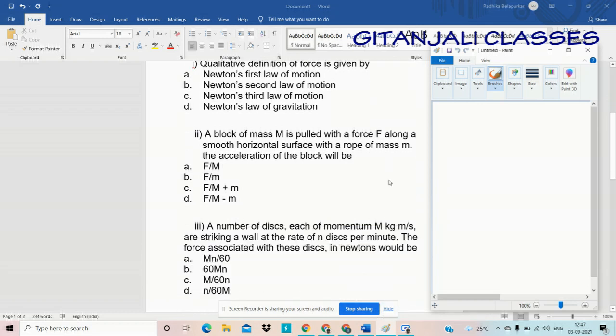Second question: a block of mass M is pulled with a force F along a smooth horizontal surface with a rope of mass small m. So object mass is capital M, rope attached to it is small m. To find the acceleration of the block, we know that F equals mass into acceleration. Here total mass is mass of the object and mass of the rope. So our mass is M plus m, and F equals mass into acceleration. So acceleration equals F by M plus m. So here correct option is option C.